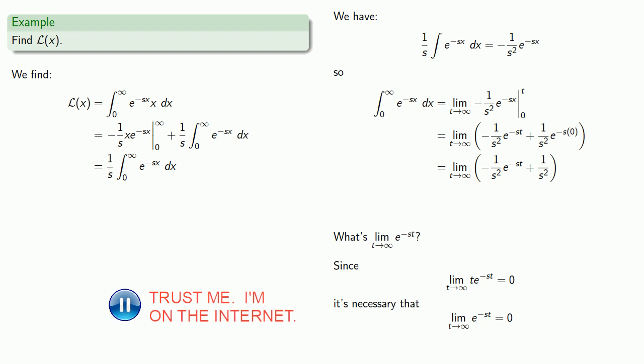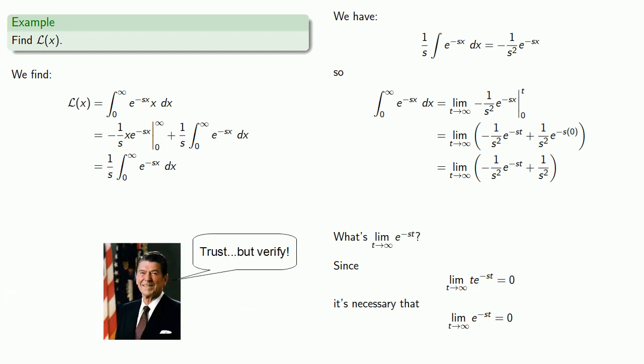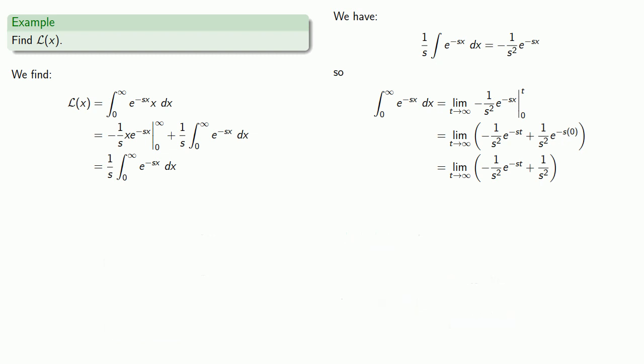Don't trust me on that — this is something you should be able to prove. In any case, this value is going to go to zero, leaving one over s squared.